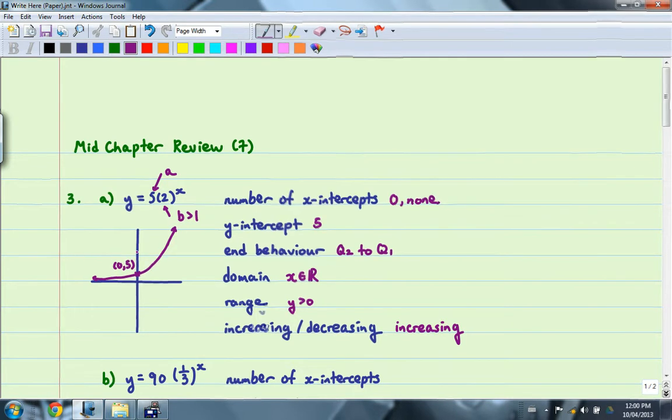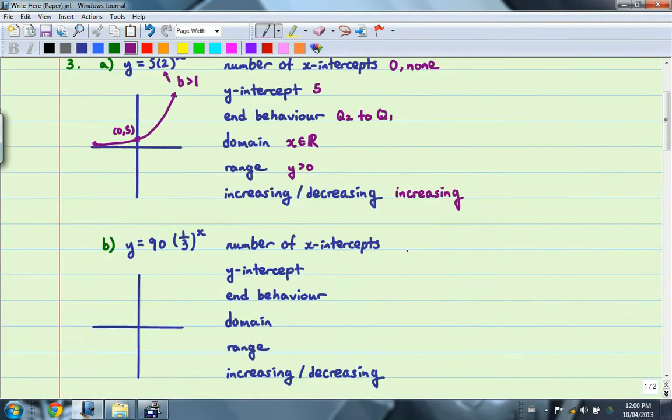On to part B. Once again, the number of x-intercepts will be 0, or none. The y-intercept will once again be the A value. In this case, the A value is 90, so the y-intercept will be 90.